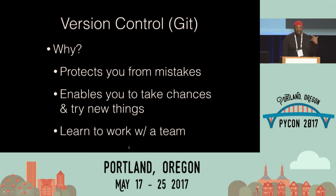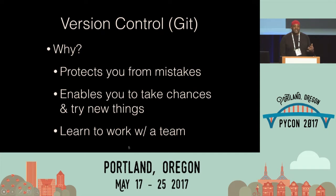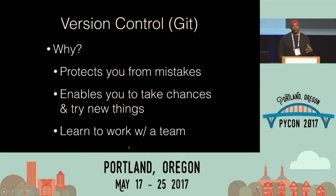First is version control — in this case, Git being one of the more common things. One of the first things that Git does for you is it helps you stay safe from potential mistakes you can make. If you've got code that's working, you make a change, and it doesn't work, you can always go back. At the same time, it makes it easier for you to work with teams. The Git workflow — branching and merging, pull requests — helps you learn to work with a team, which is something you're going to have to do as a professional software developer. Most professional software development is almost always done in teams.